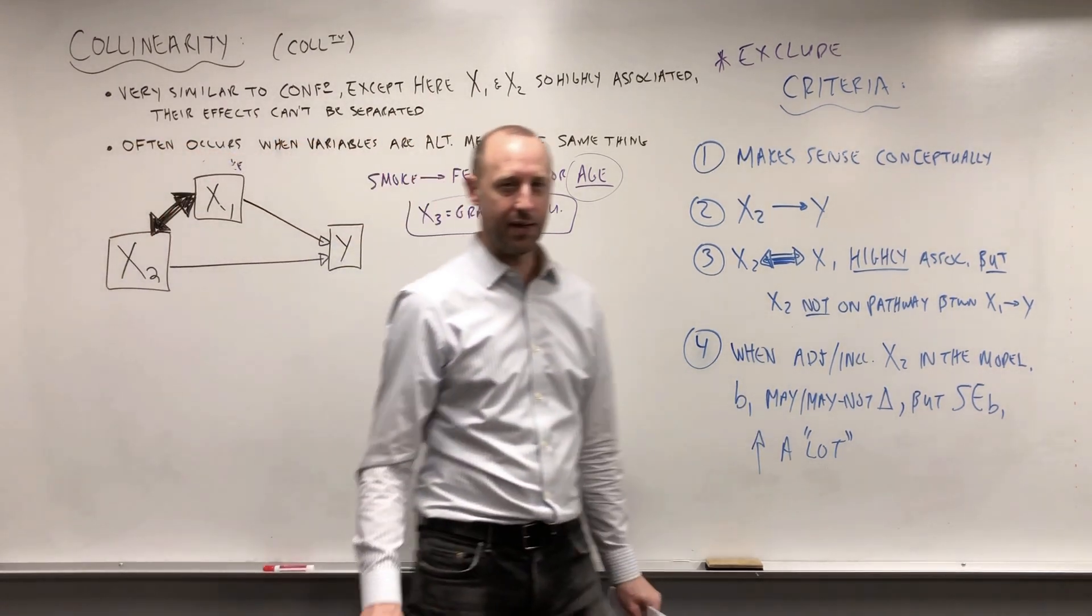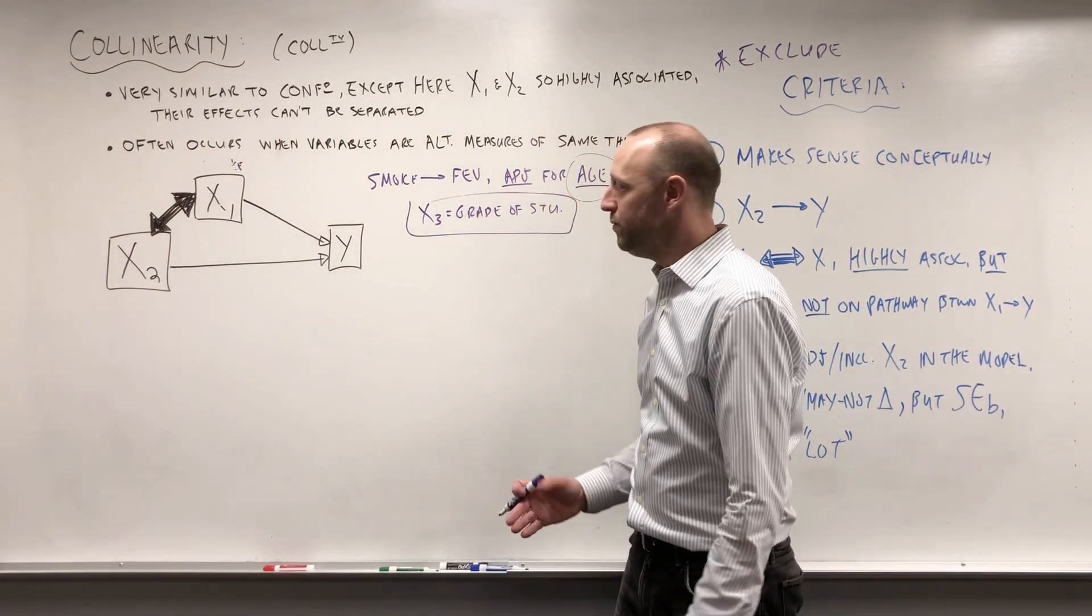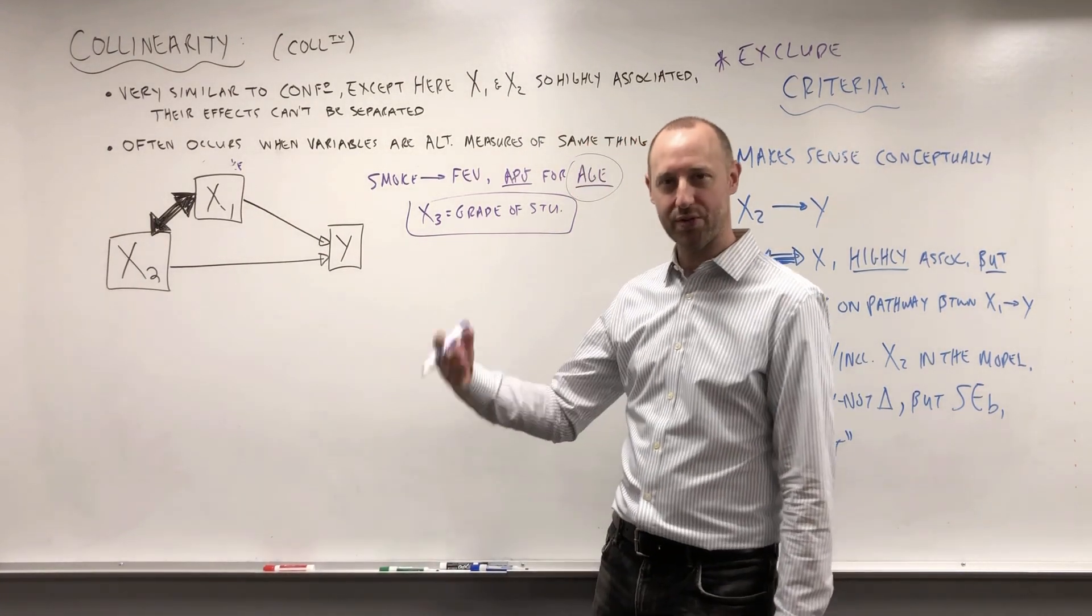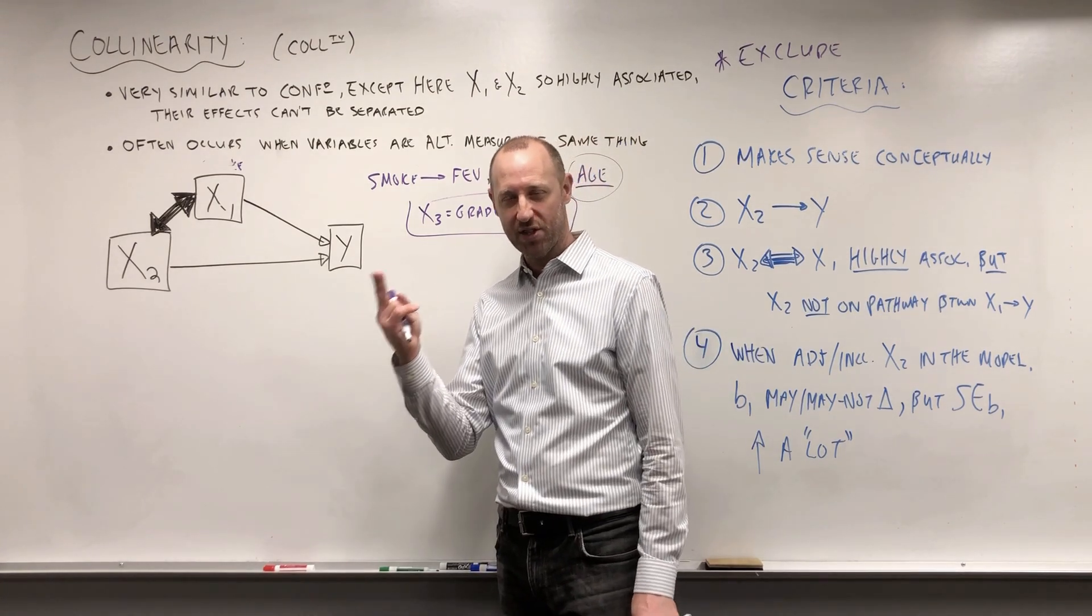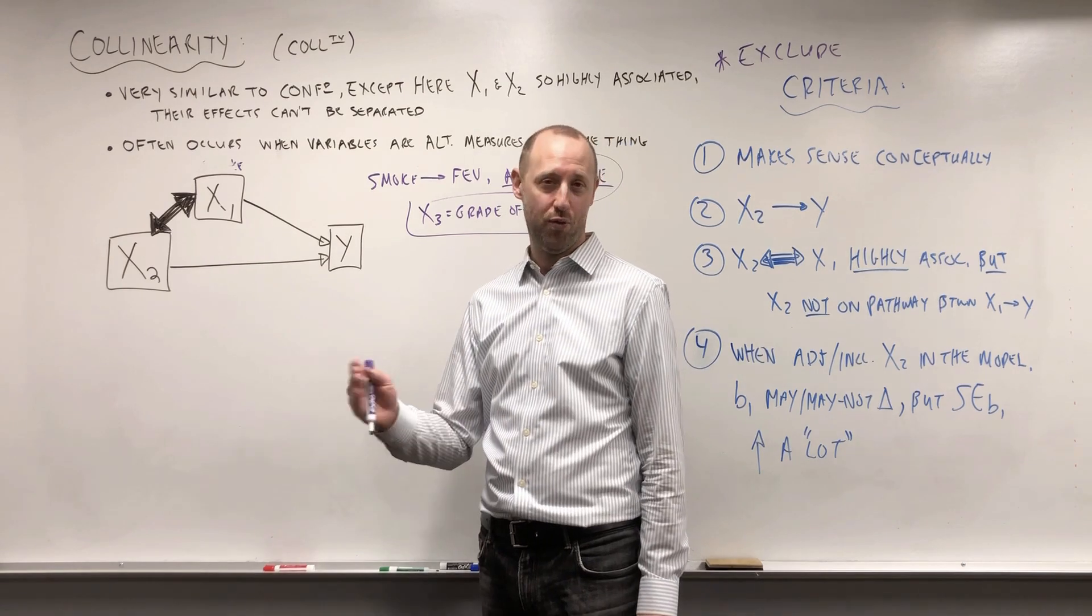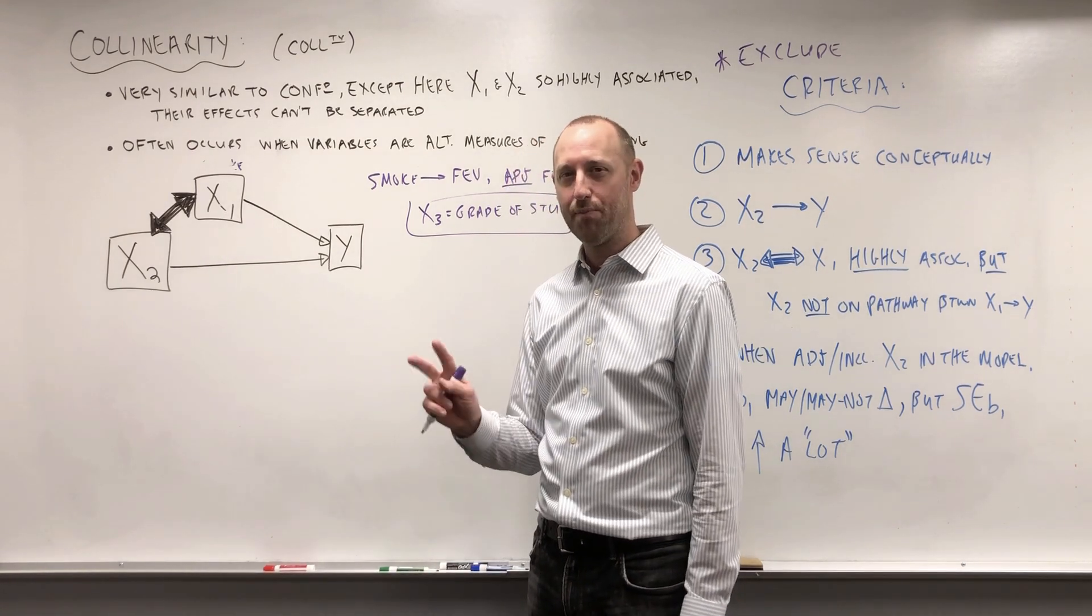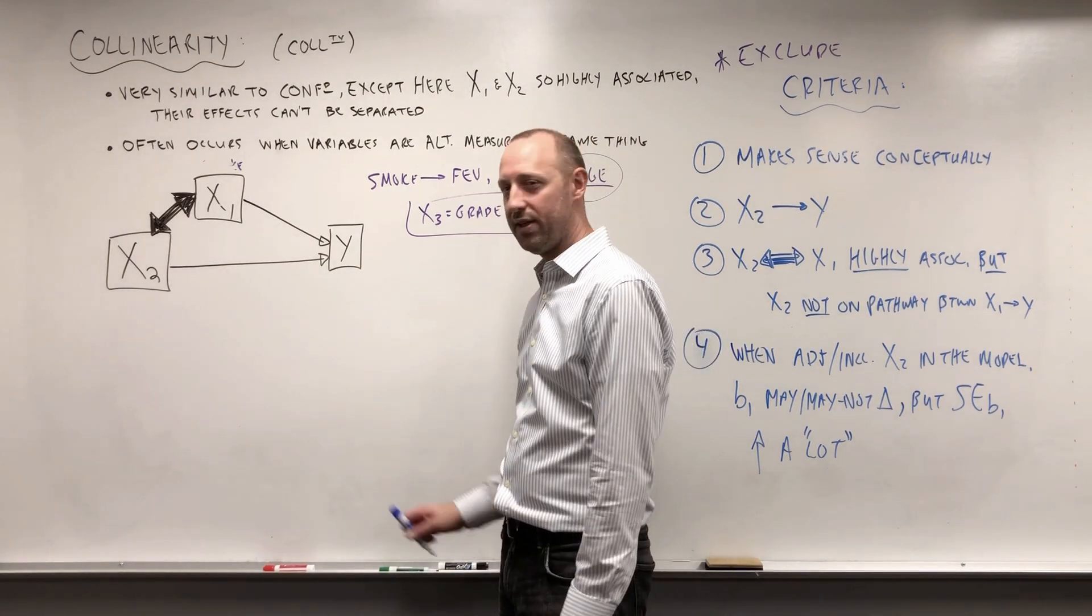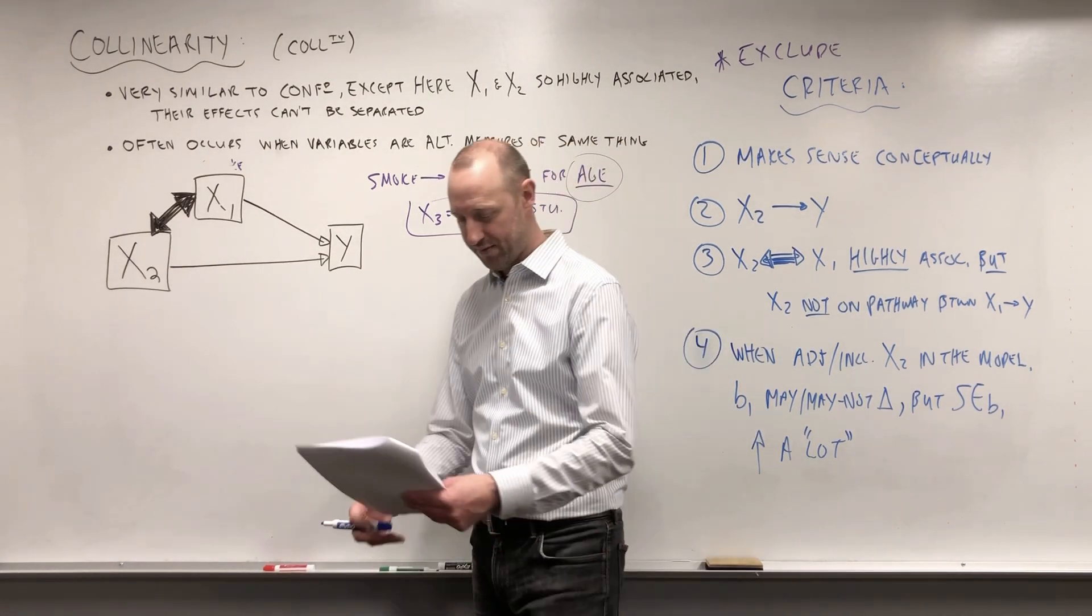If we're building a predictive model where our goal is just to predict the outcome and we have a bunch of X variables—X1, X2, X3, X4, and so on—again if there's two variables that are highly associated alternate measures of each other, we're going to want to remove one of those from the model. Having them both in there can give us unstable predictions. Our model is not going to give reliable predictions on new sets of data.